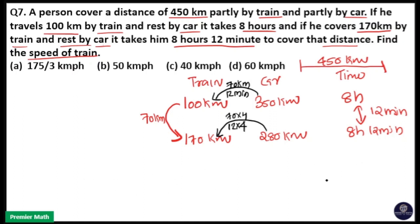That means he will have an increment of 48 minutes when he transferred this total 280 km to train distance. So that means total 450 km by train and 0 km in car, he will have total 9 hour journey. He will take total 9 hours to complete this journey.